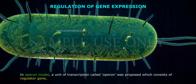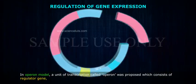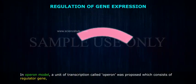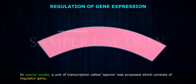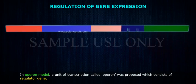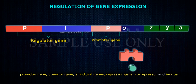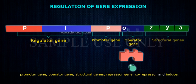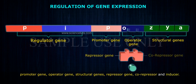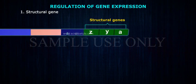In the operon model, a unit of transcription called an operon was proposed, which consists of a regulator gene, promoter gene, operator gene, structural gene, repressor gene, co-repressor, and inducer.